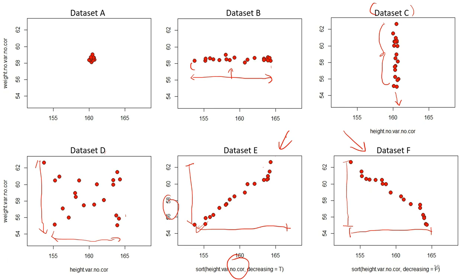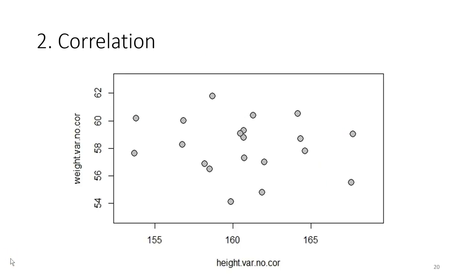Both E and F have a very strong relationship just judging from the curve. That's why it's very important to plot the data before performing the analysis. This example reminds you of the intuition you've developed over many years — when you see a plot of two continuous variables, you can already have some idea whether both variables have a strong or weak relationship and what type of relationship it is.